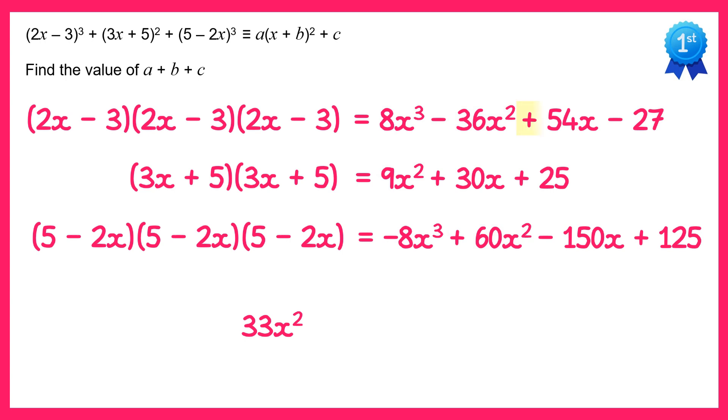Then onto the terms in x: we've got 54x plus 30x minus 150x, which gives you minus 66x. And finally the constant terms: negative 27 plus 25 plus 125 gives you plus 123.